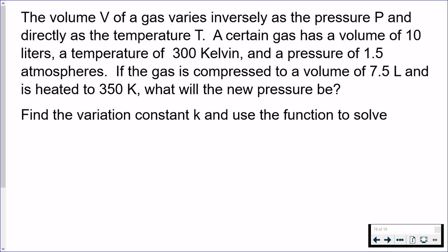The volume V of a gas varies inversely, so right away V varies means I'm going to write V equals. It varies inversely as the pressure P. So when you see inversely, whatever comes after it must go in the denominator. And it's directly as the temperature T. So directly is going to go in the numerator. Inversely is going to go in the denominator. This is just how we're going to combine those different types of variations.